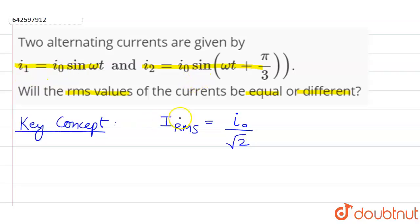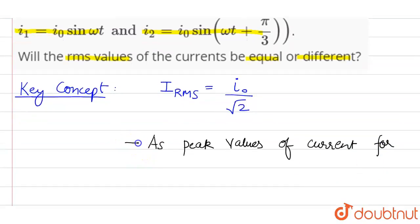So I_RMS for both the currents would be equal. As peak values of current for both the currents is equal, so this implies the RMS value of current will be equal.